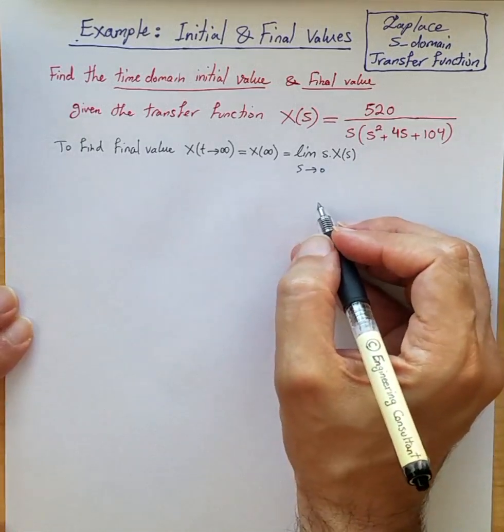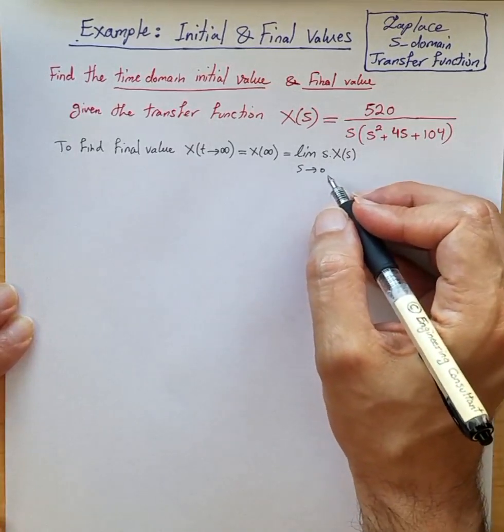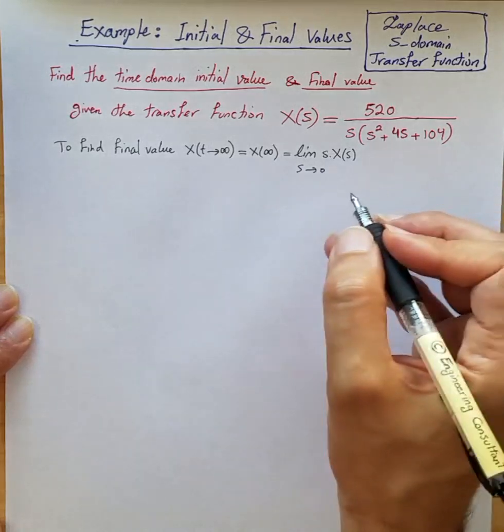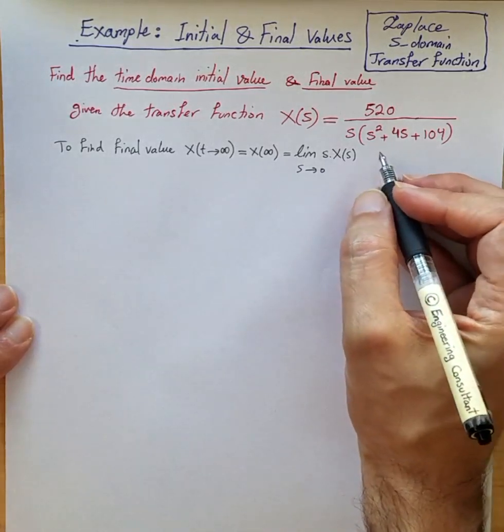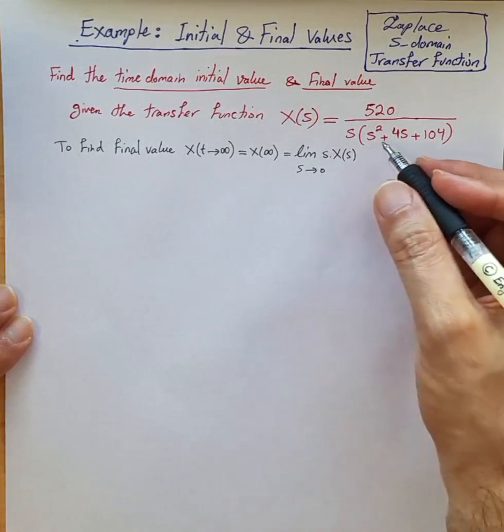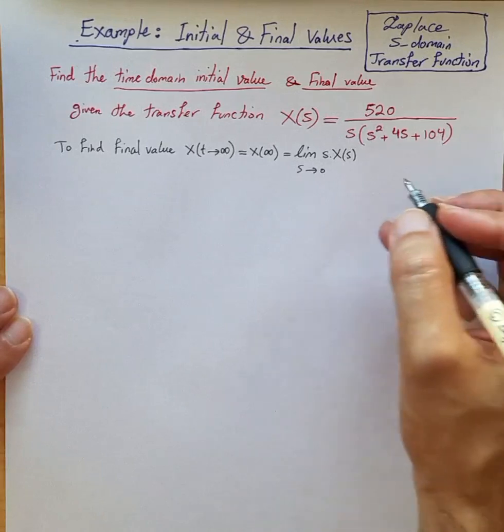The only condition is the function needs to be bounded and both the Laplace transform of the function and its derivative should exist. The way to check that is to make sure that all the poles of the given transfer function should be on the left-hand side of the s-plane.